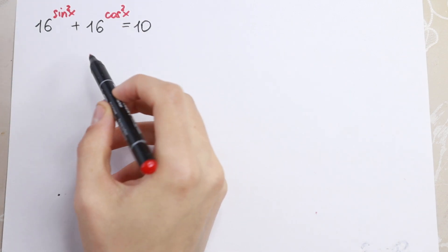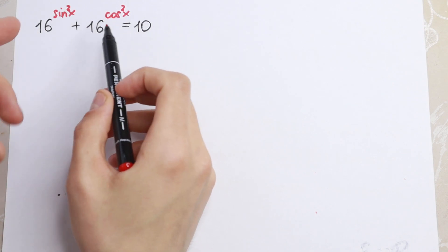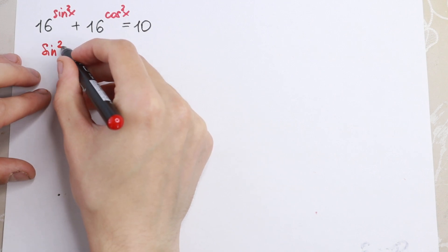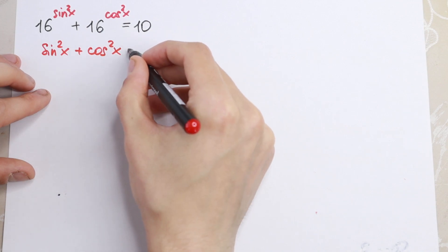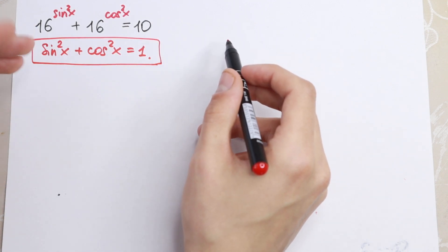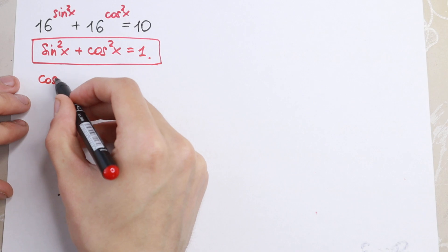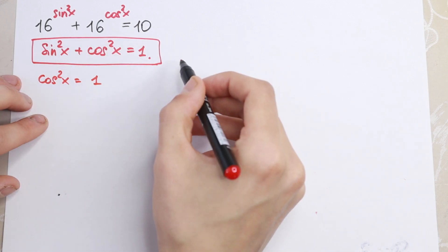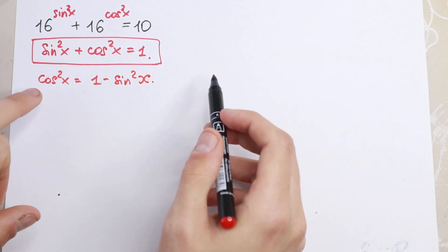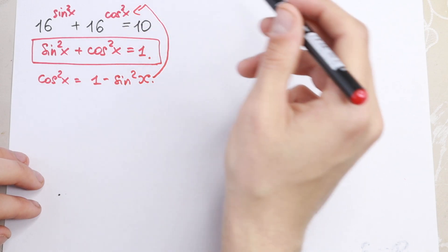First of all, we need to know that we have the same basis on both sides and a constant on the right, with different exponents — sine and cosine. We need the main trigonometric identity: sine squared x plus cosine squared x equals 1. This is the main rule we need here. So we express cosine squared x using sine: cosine squared x equals 1 minus sine squared x. Let's use this substitution and plug it in.